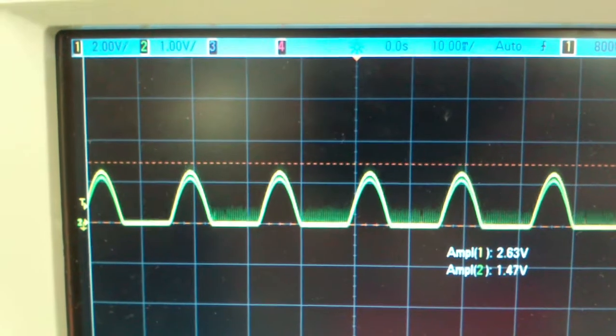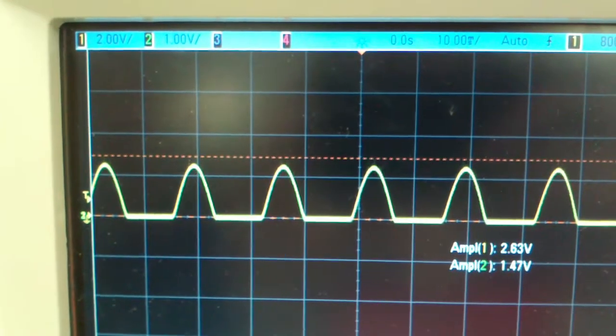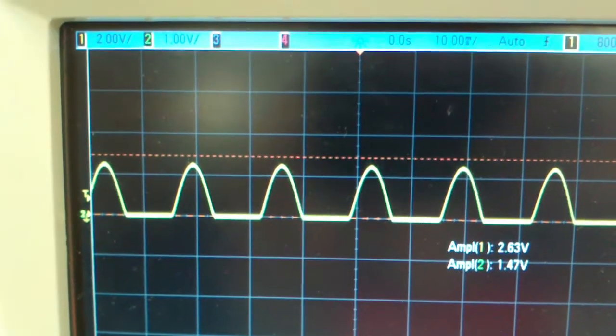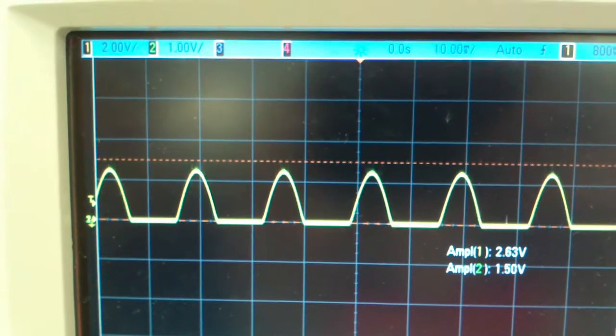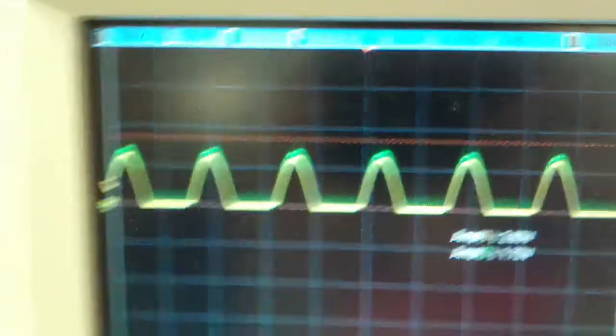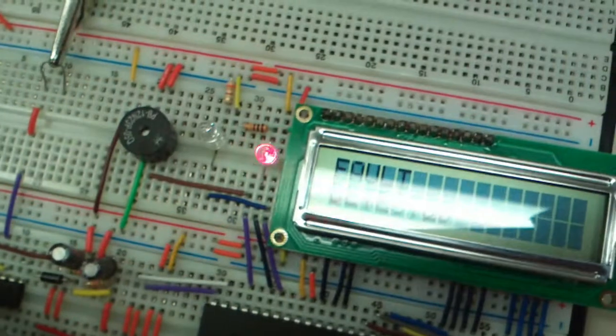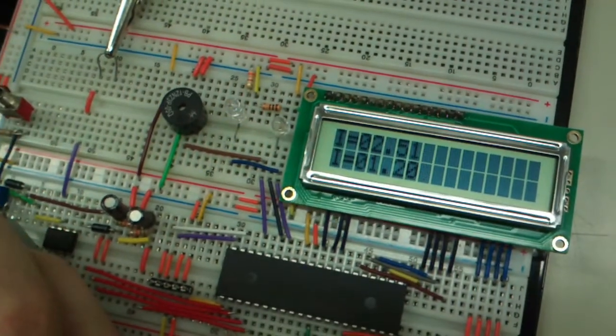There it is. And you can see that the threshold is about 10% there, and that's what it's set to right now. The threshold is set to 10%. So now we can go above, and you can see that the other LED is lit up. Below, above.